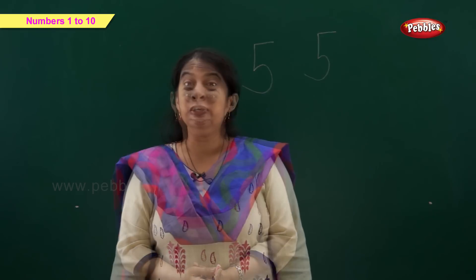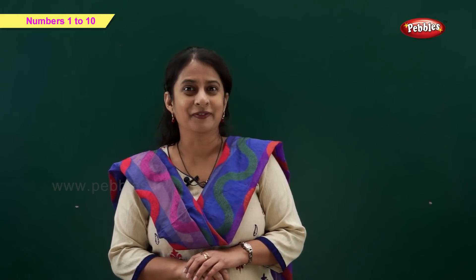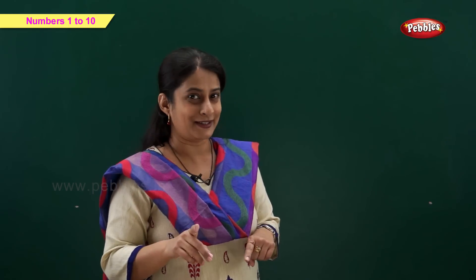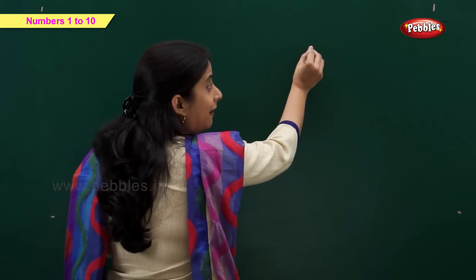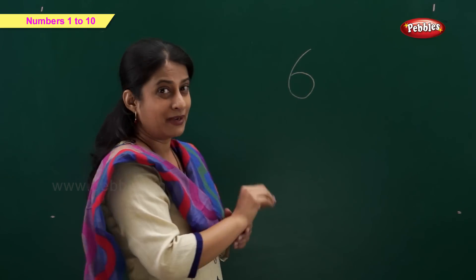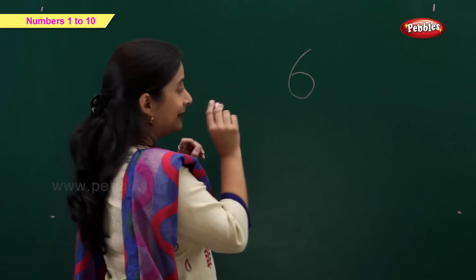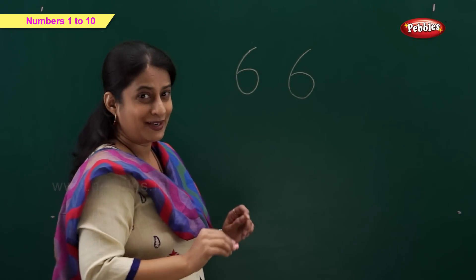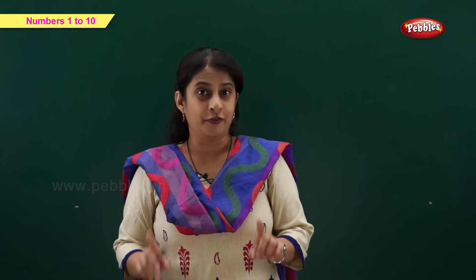Yes. So friends, now what comes after number 5? Number 6. Yes, you are learning quite quickly. So let's write number 6. We need a curve joining another curve — that makes number 6. See how simple. A curve joining another curve makes number 6.